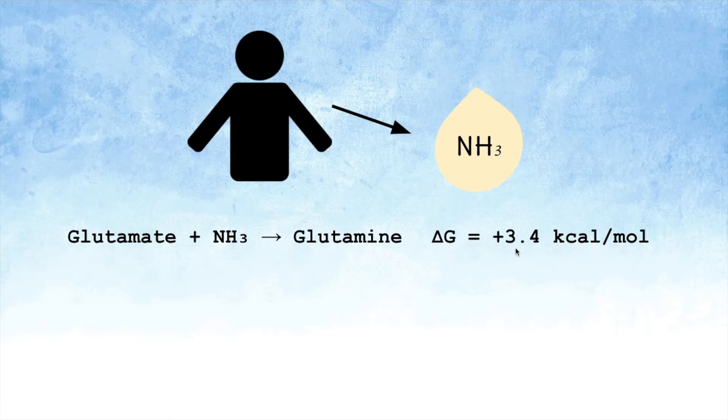Here is one of the reactions involved in that biological process. Glutamate reacts with ammonia to form glutamine, an endergonic reaction which is indicated by its positive delta G.